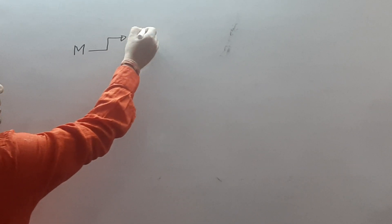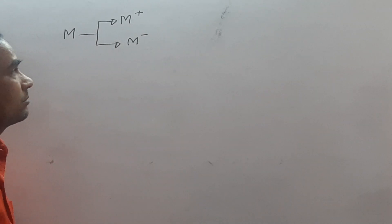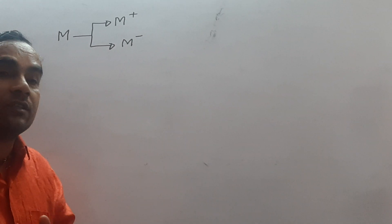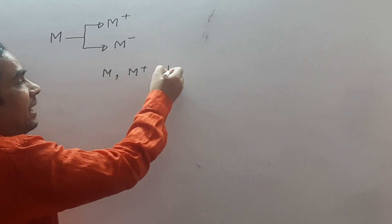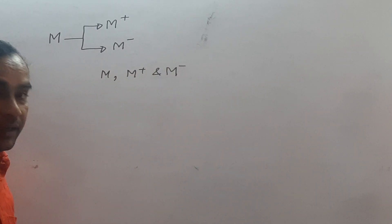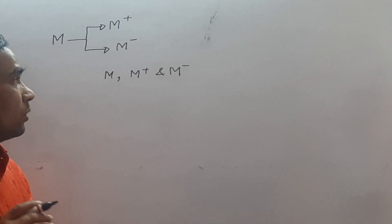Our first question is: an object M is first positively charged and then it is negatively charged. Then arrange M, M plus, and M minus in ascending order of mass.